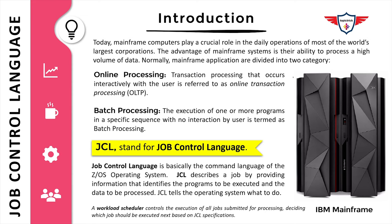The first term is online processing and the second is batch processing. Mainframe applications are divided into these two categories. Online processing refers to transaction processing that occurs interactively with the user — also called online transaction processing. For example, you have a screen through which you are accessing a customer record and updating information in the database related to that customer. On the other hand, batch processing is the execution of one or more programs in a specific sequence with no interaction by the user.